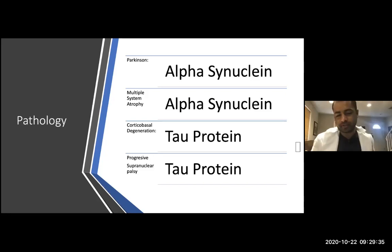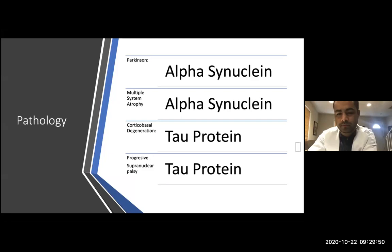It's important to understand these diseases at a pathological level. The main problem is accumulation of alpha-synuclein in Parkinson disease and multiple system atrophy, while in corticobasal degeneration and progressive supranuclear palsy there is a tau protein problem. It's important to differentiate which type of protein accumulates in each disease.